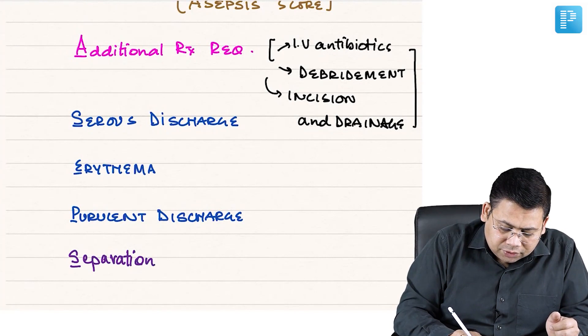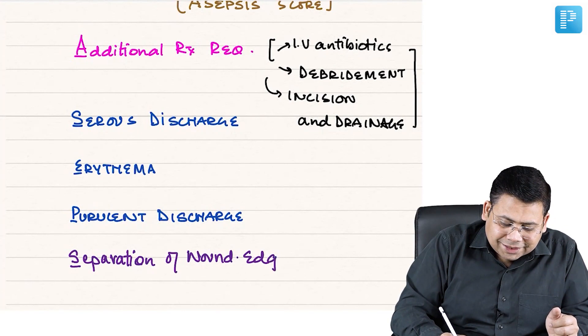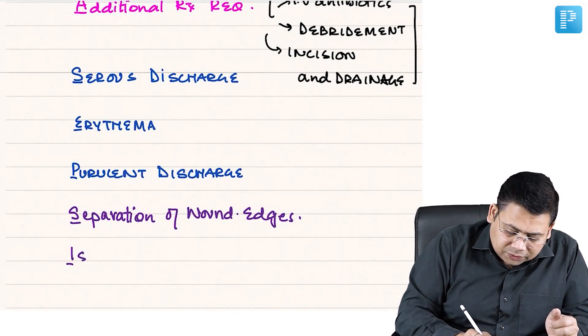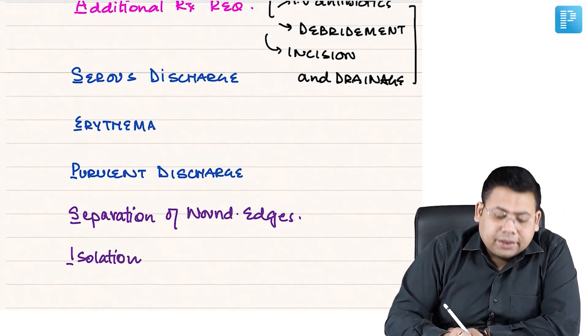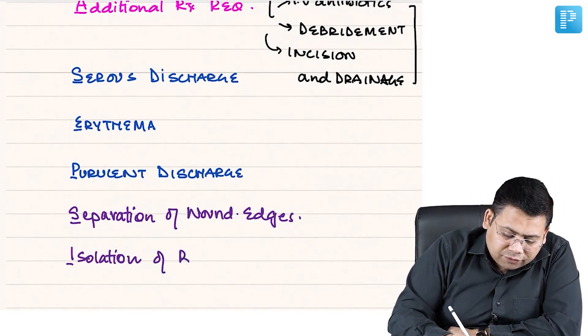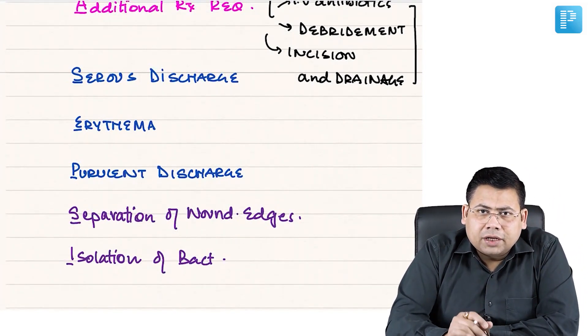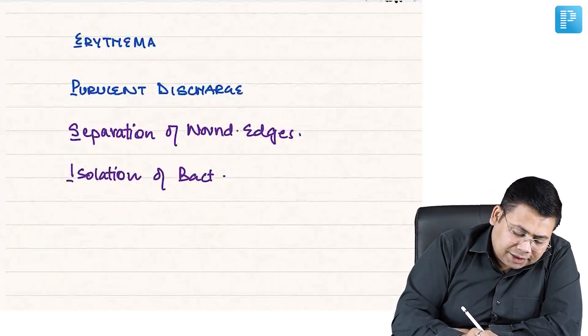I stands for isolation of bacteria. What do you mean by isolation of bacteria? It is a culture that we require. We have taken out culture, so isolation of bacteria.